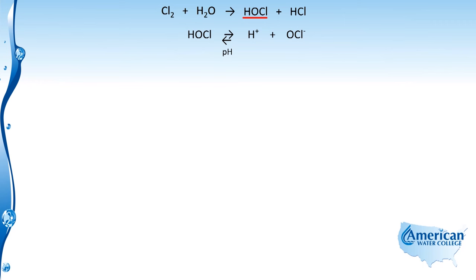Conversely, as pH increases, the equilibrium shifts the other way, favoring the formation of the hypochlorite ion.